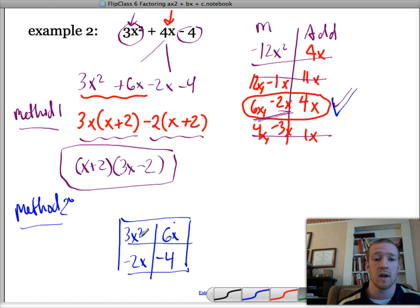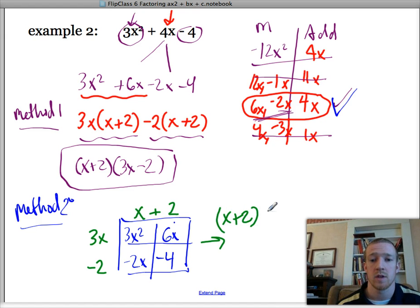Now what I do is I look for the greatest common factor of each of the columns and each of the rows. So what can I divide out of each column? Well, I can only divide out an x here. And here I can divide out a 2. That works, right? And it's a positive 2. Here I can divide out a 3x. And here I can divide out a negative 2. So those are my factors.